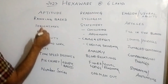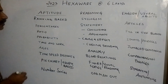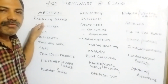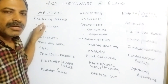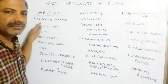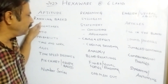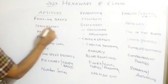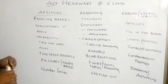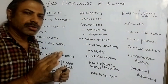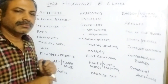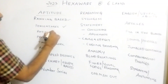Let us see the aptitude syllabus. First, ranking-based questions — for example, if you are 15th rank from the front or back, what is your rank? Ranking-based questions. Number two: percentages. All these topics will get one or two questions each — maximum one or two. Okay, then ratios.